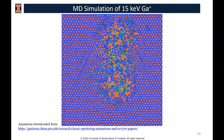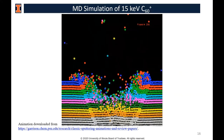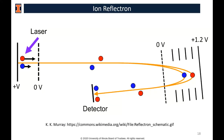A common type of time-of-flight detector allowing energy focusing is the ion reflectron, used in TOF-SIMS systems from IONTOF and in many MALDI systems. Secondary ions are accelerated from the sample by an immersion lens. Since kinetic energy equals one-half mass times velocity squared, lighter ions reach the detector faster than heavier ones. The reflectron compensates for ions that have slightly different initial energies from the sputtering process, ensuring ions of the same mass reach the detector at the same time, providing more signal and higher sensitivity.